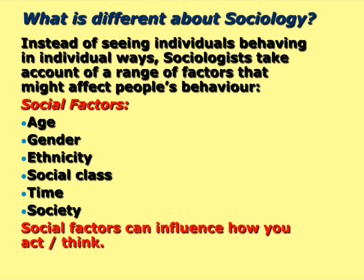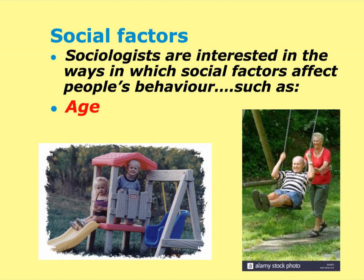Let's look at some examples. Age is a social factor that can affect behaviour. Certain types of behaviour are associated with certain ages and considered normal. For example, if you're a toddler it's perfectly normal to play on the swings. What's less normal is seeing elderly people playing on the swings — you might think that's sweet or unusual, not something you often see. Age, to an extent, controls what you do, what you think, and what you feel.